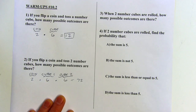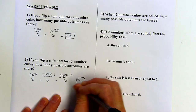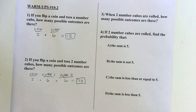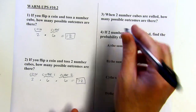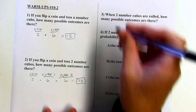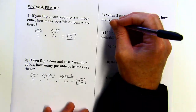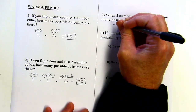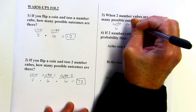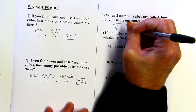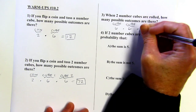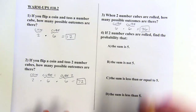Next up: when two number cubes are rolled, how many possible outcomes are there? It's going to be 36, because we've got the two cubes and six things can happen on each. Multiply them together for a total of 36.